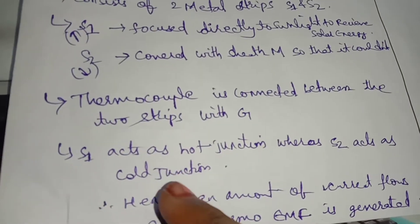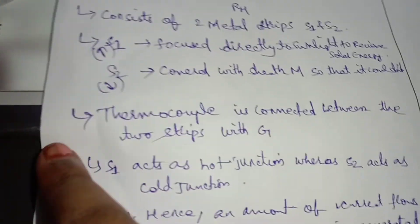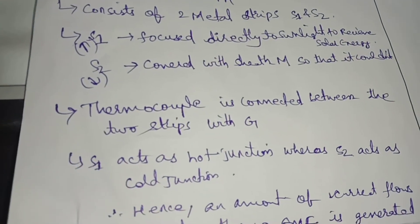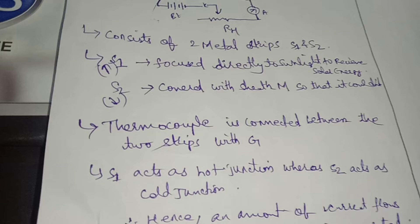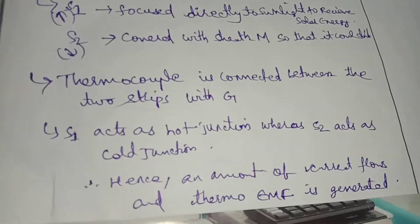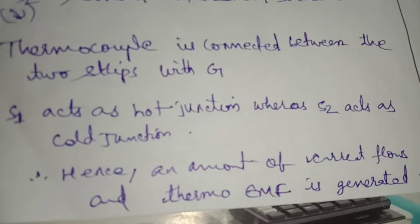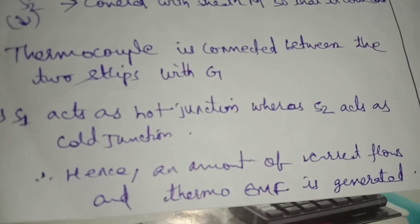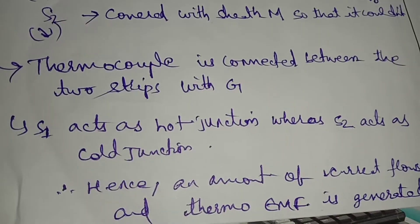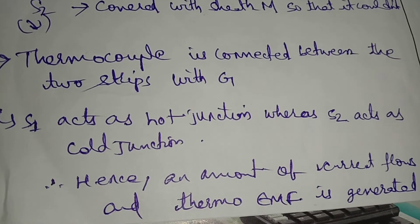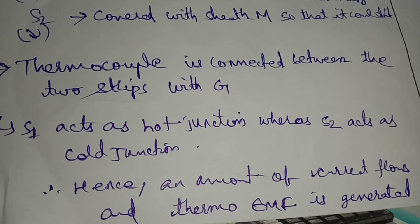A thermocouple is connected between the two strips with the galvanometer. S1 acts as the hot junction, whereas S2 acts as the cold junction. S1 is directly exposed to the sunlight, whereas S2 is not directly exposed, that's why it is called the cold junction. Hence, an amount of current flows and thermo-EMF is generated. This hot junction and cold junction are connected to the galvanometer.